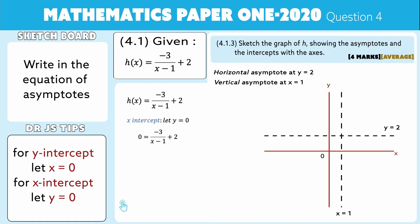We throw the 2 to the left-hand side, and we get -3/(x-1) = -2. Cross multiply: -3 = -2x + 2.